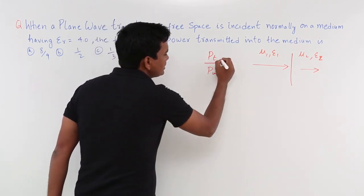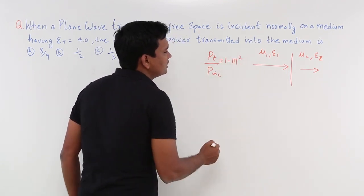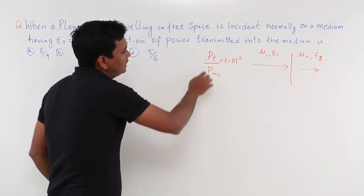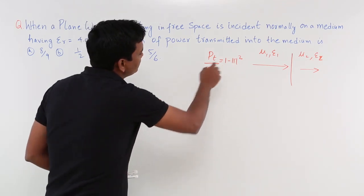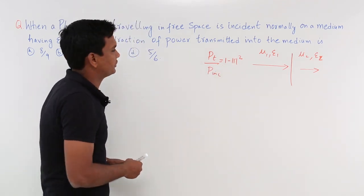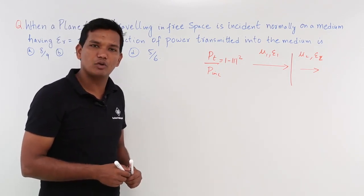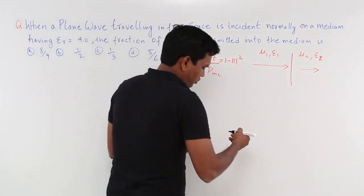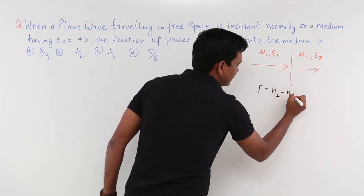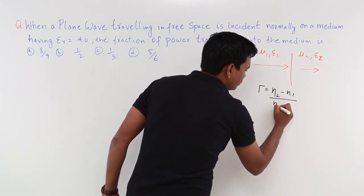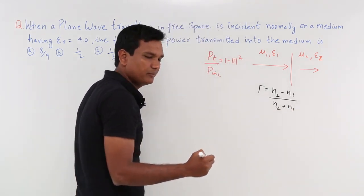If you recall, Pt by P incident is equal to 1 minus mod tau squared. This we have already seen. So basically the power transmitted by power incident is 1 minus mod of tau squared, where tau is nothing but the reflection coefficient. Now, how can I find the reflection coefficient in terms of normal incidence?